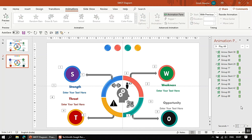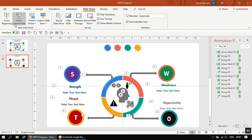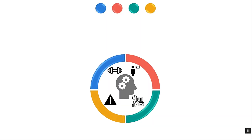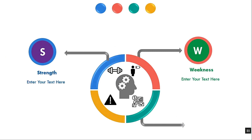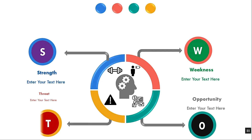Now let's try it. Go to Slide Show, From Current Slide. This is what we have — clicking reveals the Strength, then Weakness, then Opportunities, and finally the Threats, each animating in sequence. I believe you will like this. If you like it, don't forget to subscribe to this channel. Thanks for watching, and we will see you in the next video. Thanks for your time.